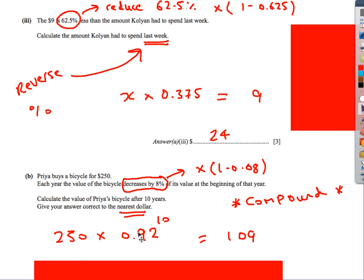So this is my calculation. I do 250 times by 0.92 to the power of 10. Stick that on your calculator. Round it to the nearest dollar, so don't throw away the last mark. And that's going to be $109.